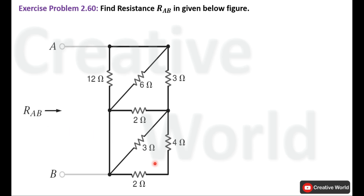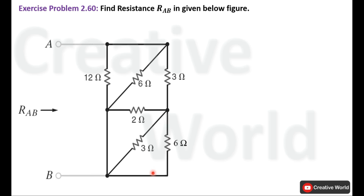We will start solving this problem from this end. These two resistances, 4 ohm and 2 ohm, are connected in series. We can find their equivalent resistance by adding both values: 4 ohm and 2 ohm will become 6 ohm. So we will replace both resistances with a single resistance having the value of 6 ohm. The updated circuit diagram is provided here.